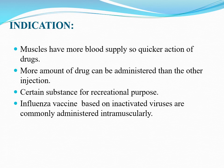Indication: Muscles have more blood supply so quicker action of drug. More amount of drug can be administered than with other injections. Influenza vaccine based on inactivated virus is commonly administered intramuscularly, for example influenza vaccine.